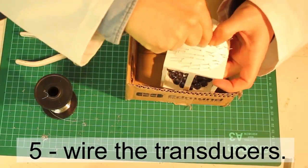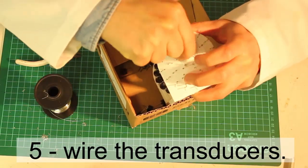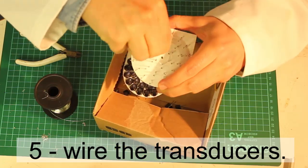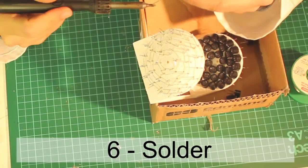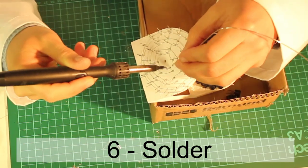Wrap exposed wire around the pins in six concentric rings. To secure the contacts, solder the pins to the wire.